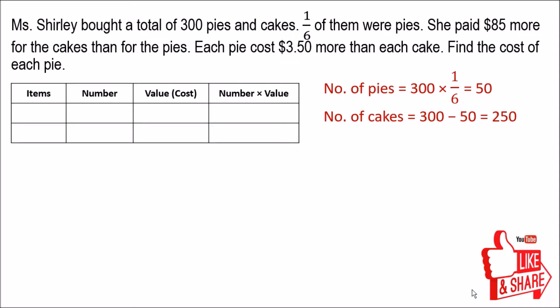For the cake row: there are 250 cakes. We do not know the cost of each cake, so we use one unit as the cost of the cake. The number of cakes times the cost of each cake gives us 250 units as the total cost of the cakes.